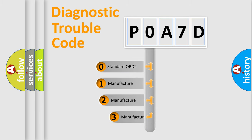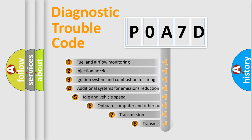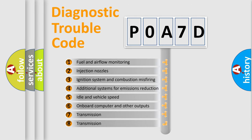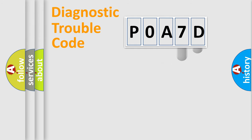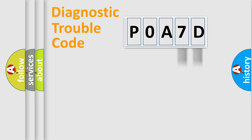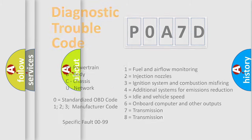If the second character is expressed as zero, it is a standardized error. In the case of numbers 1, 2, or 3, it is a more specific expression of a car-specific error. The third character specifies a subset of errors. This distribution is valid only for the standardized DTC code, and only the last two characters define the specific fault of the group. Such a division is valid only if the second character code is expressed by the number zero.